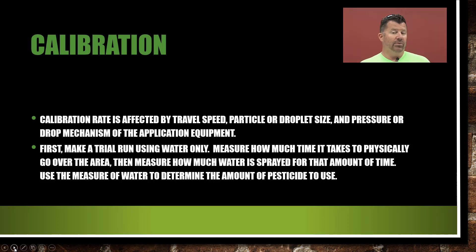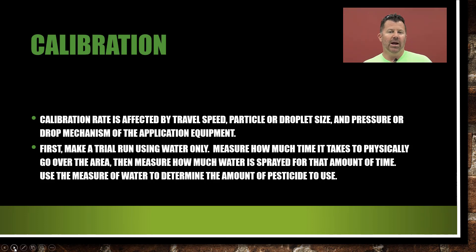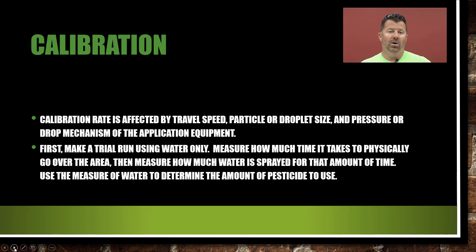Calibration rates are affected by travel speed, particle or droplet size, and pressure or drop mechanism of the application equipment. Travel speed matters — if you're walking, some people walk faster and others slower. You want to try to maintain between 2 and 3 miles per hour when walking. Some people are taller and some shorter, so their strides are going to be different. That's why each applicator needs to calibrate their own equipment. A short 5'6" individual should not calibrate a spreader or backpack sprayer for someone who's 6'4" — the strides are longer and the time-travel distance over the test course is going to be totally different.